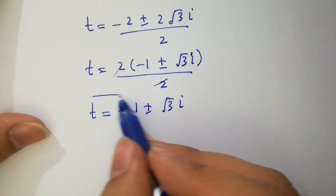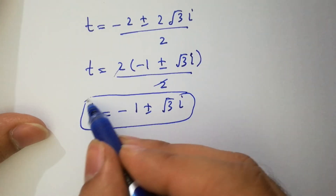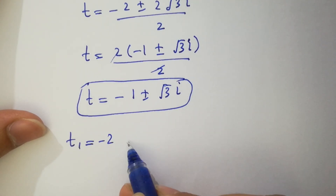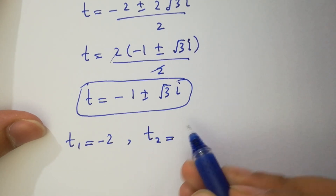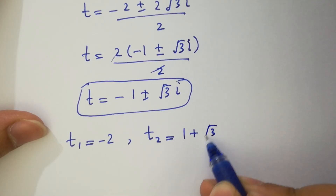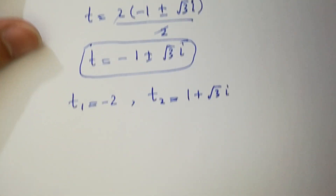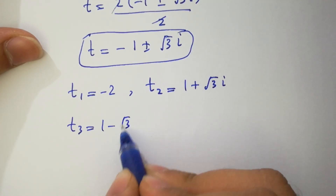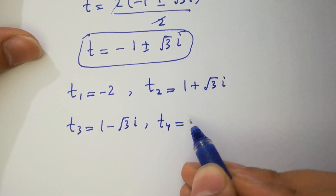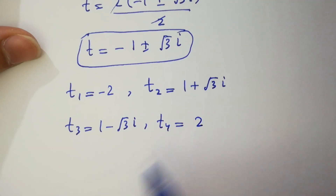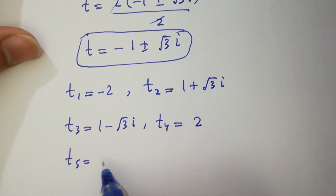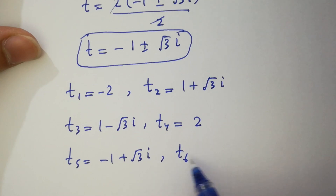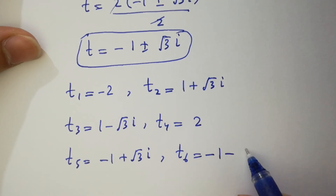So finally we have 6 solutions: t₁ = −2, t₂ = 1 + √3·i, t₃ = 1 − √3·i, t₄ = 2, t₅ = −1 + √3·i, and t₆ = −1 − √3·i.